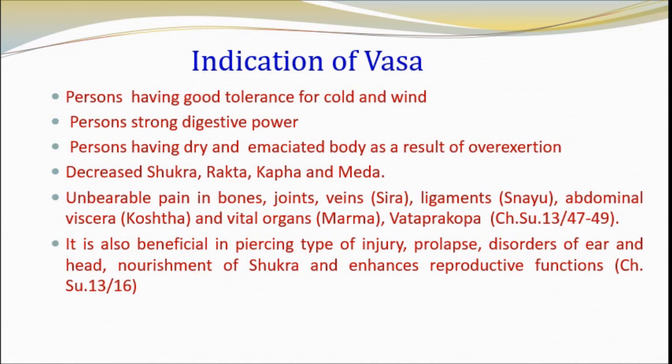Properties of Vasa and Majja: they are sweet, Brimhana (nourishing), aphrodisiac and promoter of strength. Their hotness and coldness is determined as per the nature of the source animal. Animals of marshy places are hot, so their fat and marrow will also be hot; animals of arid zones are cold, so their fat and marrow is also cold. Contemporary research has reported that on exposure to cold there is increased browning of white adipose tissue and recruitment of brown adipose tissue, resulting in enhanced thermogenesis and mitochondrial activity. Indication of Vasa: it is indicated for those tolerant to wind and heat, having rough body, emaciated due to weight carrying and travelling on foot, deficient semen and blood, cough, fat absorbed, intense pain of bone joints, veins, tendons, vital parts and abdomen, strong Vata covering all channels and very strong digestive power. Vasa is also indicated in wounds caused by puncture or perforation, fracture, trauma, utero-vaginal displacement, earache and headache.